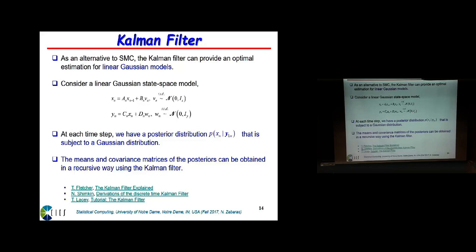I am considering two equations as my dynamical system. X is the unknown state and it evolves with this equation here. The observations are Y and they are linear in the state. The noise V and W here are Gaussian. The matrices A, B, C, and D have subscripts to indicate they can change with time. This is useful when we do linearization — for example, with non-linear dynamics, if you linearize at every step you can write them in this form.